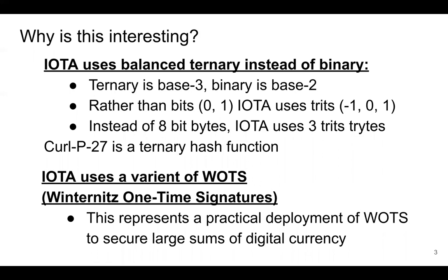Winternitz one-time signatures are a hash-based signature scheme and they haven't seen much practical deployment. So this is interesting to look at because it's a deployment of Winternitz one-time signatures used to secure large sums of digital currency, and we can look at attacks and see how these signatures may fail in practice when they're deployed.